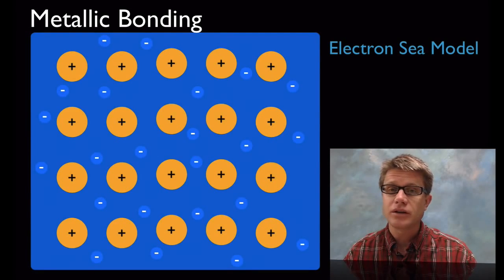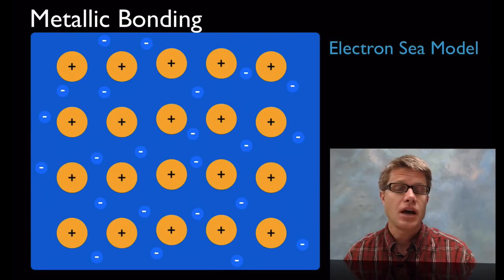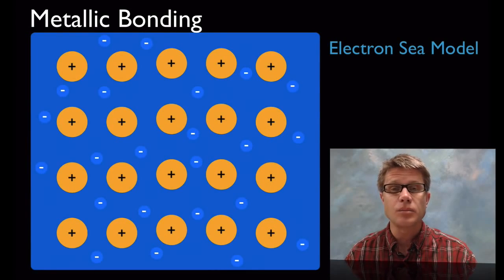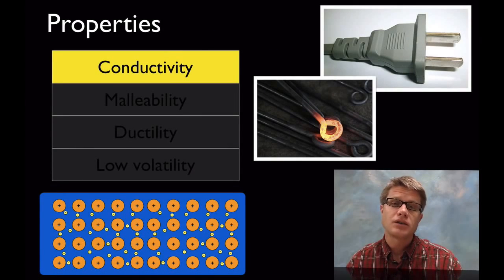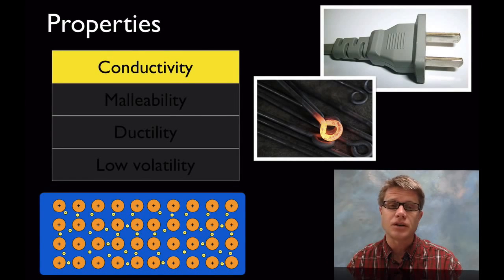And remember these are going to be transition metals. So these are going to be atoms that have a lot of unpaired electrons in their d orbital. And as a result these electrons have a freedom to move. And as a result we have all of these properties that come from metals.